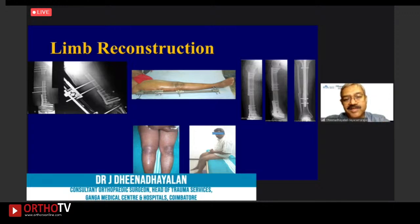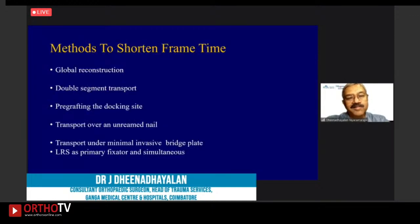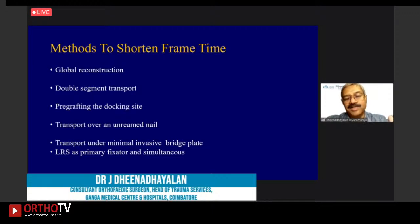To reduce frame time, consider global reconstruction earlier, double segment transport, pre-grafting, or transport over a reamed nail. When fragments are present and periosteum seems in continuity, fixation with bone graft can still go on to heal. One patient had screws break requiring return to surgery for re-fixation with the same plate — it went on to heal well. When periosteum is in continuity, adding a fibular strut graft with bone grafting and fixation also gives good function.